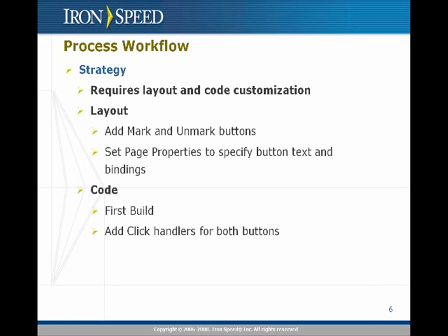Our strategy here for the code customization is two-fold. The first is layout customization and the second is code customization. For layout, we want to add the mark and unmark buttons, specify the page properties for button text and bindings. For code, we need to change the click handlers for both buttons to retrieve all selected rows, change the status of the flag, and save it to the database. Two-step process: add the layout buttons, then do the click handlers for both functions.